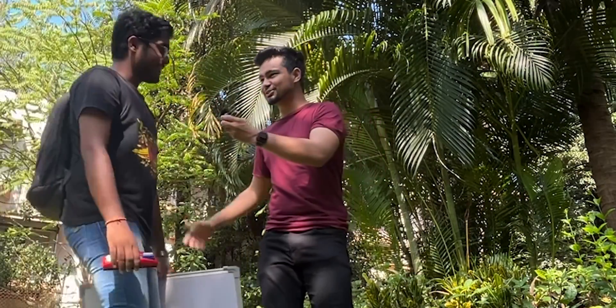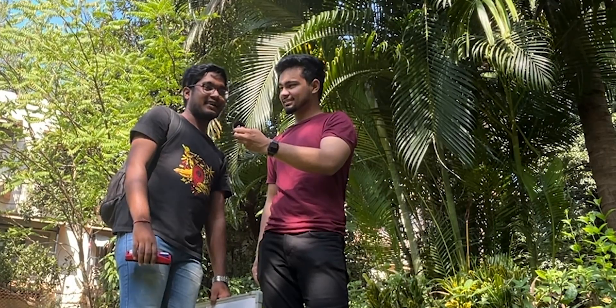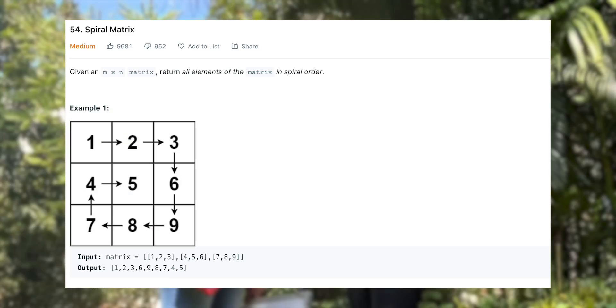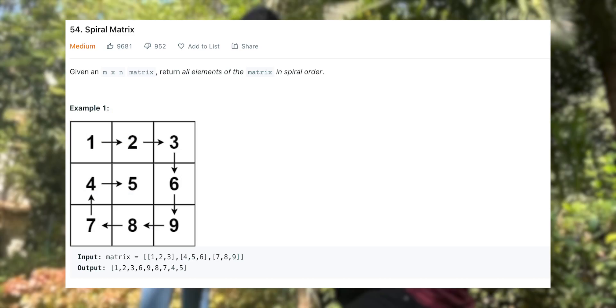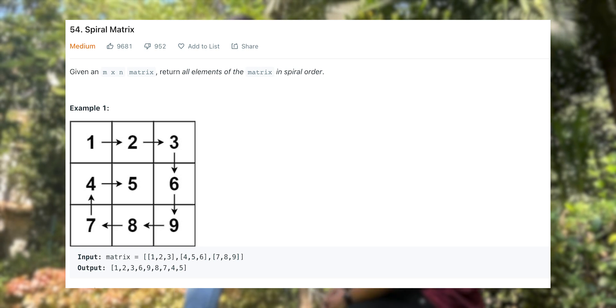Now we have one of our friends. Can you please introduce yourself? Hi, I am Ashutosh Pankaj and I am from Computer Science 3rd year. So the question I'm asking is: you are given a matrix, you have to print it spirally. You have to write a code for this and you have like 5 minutes because it's not that difficult.